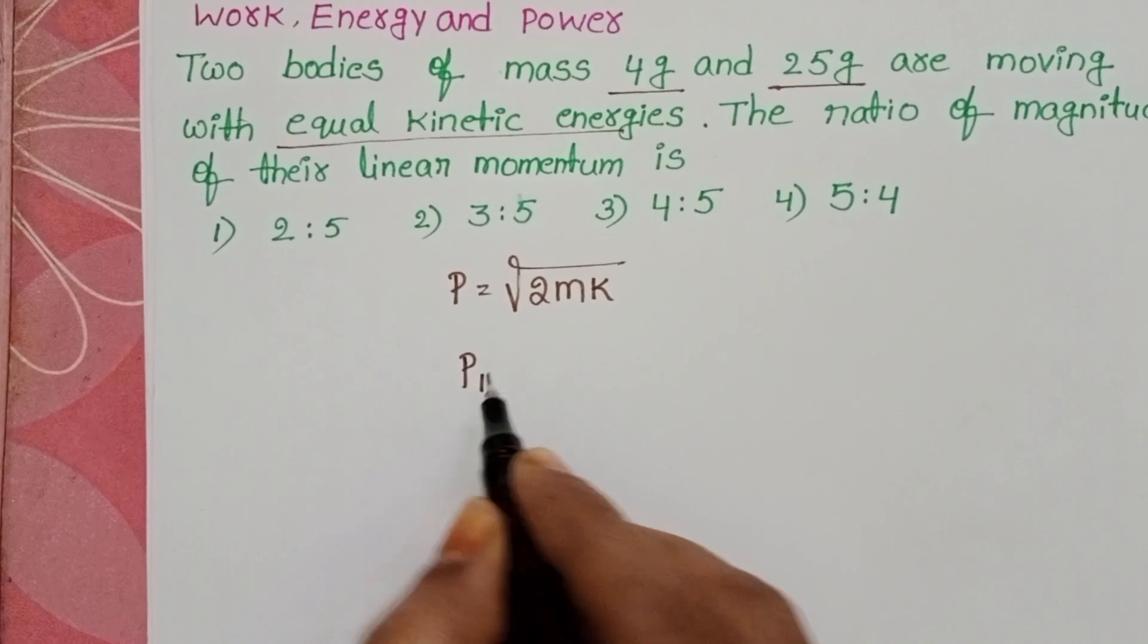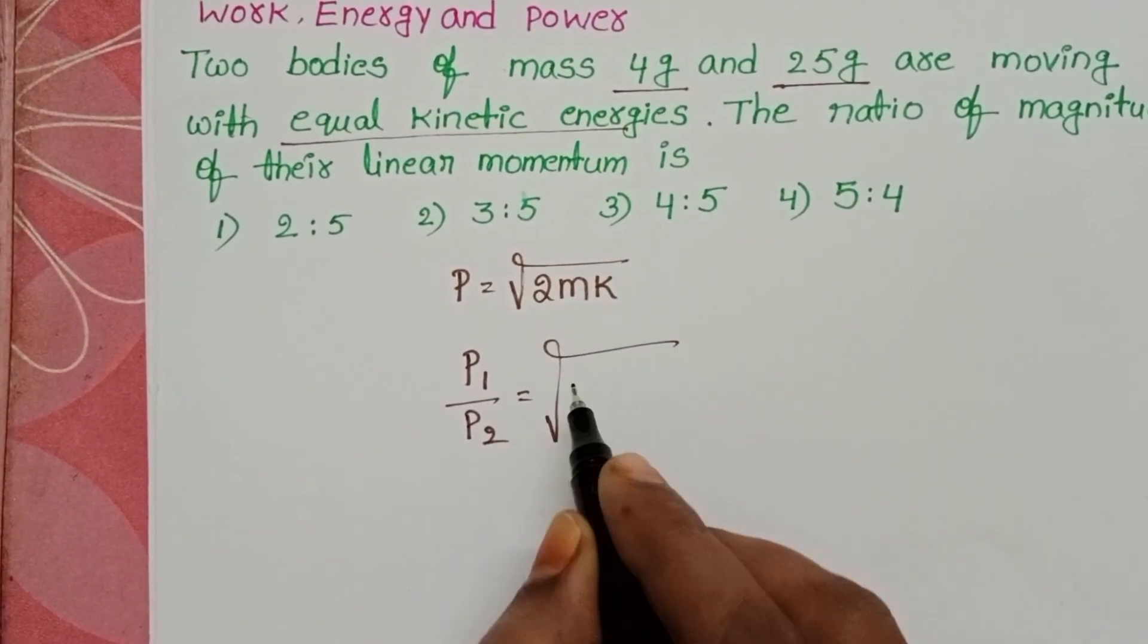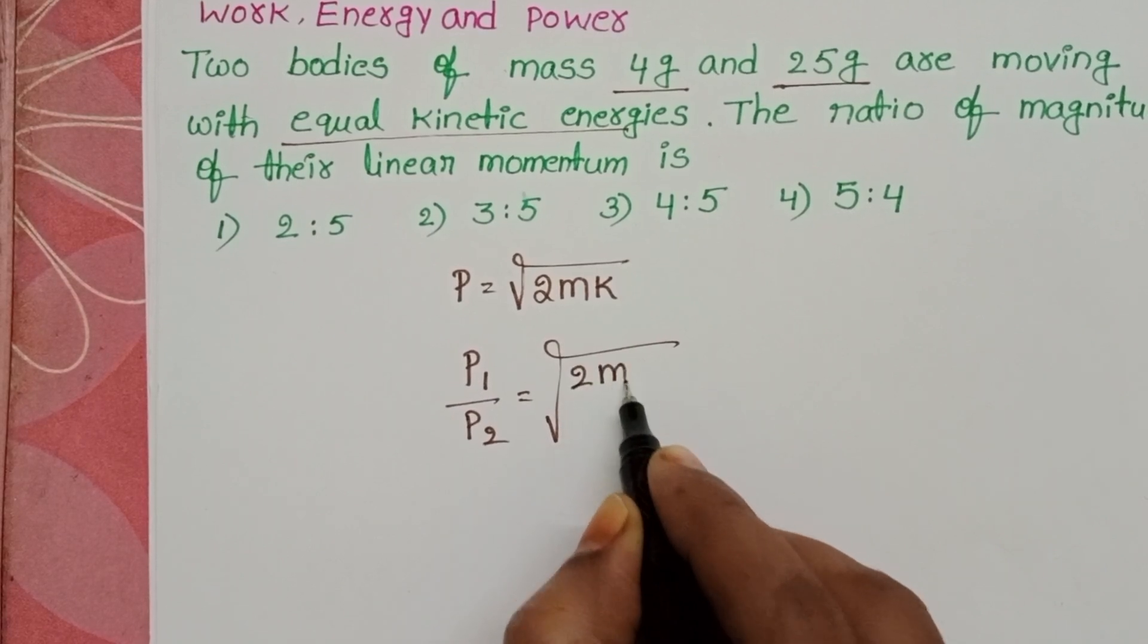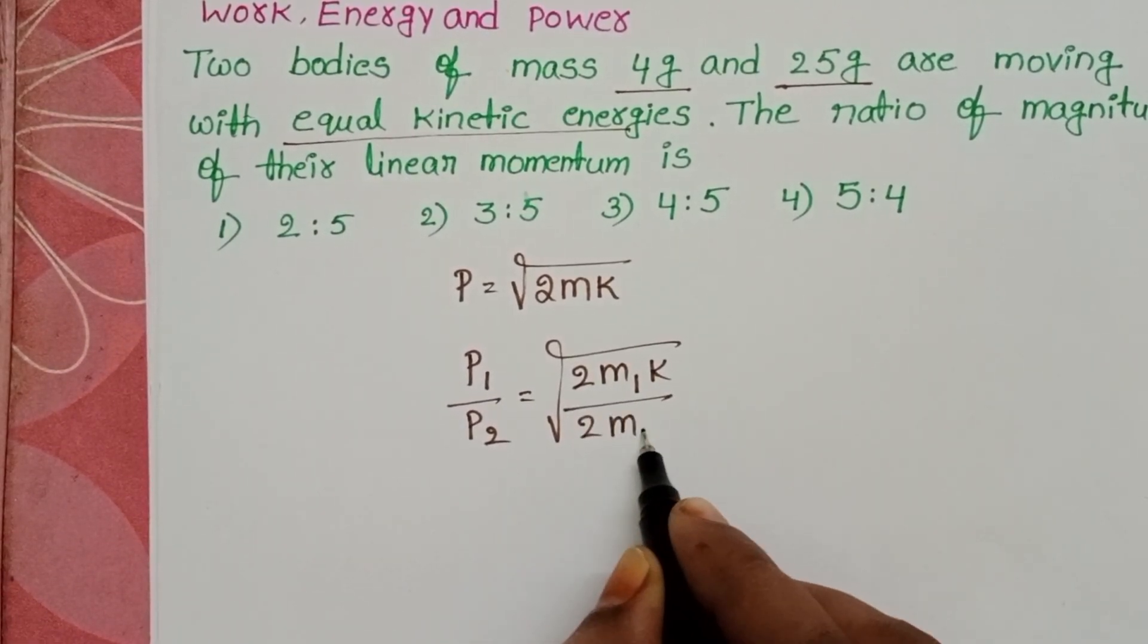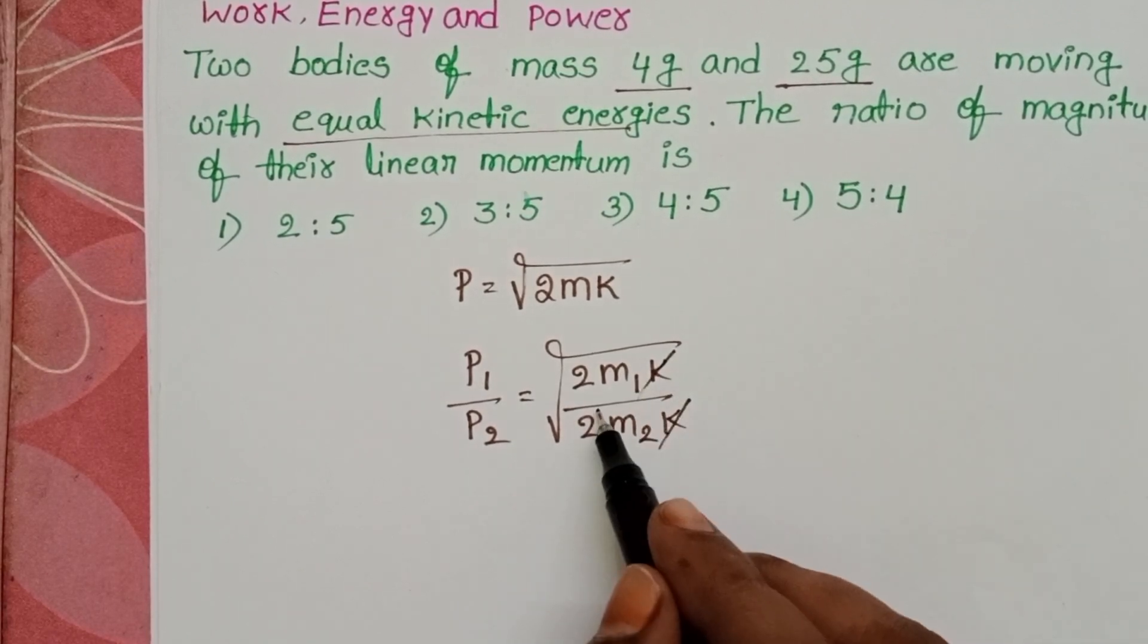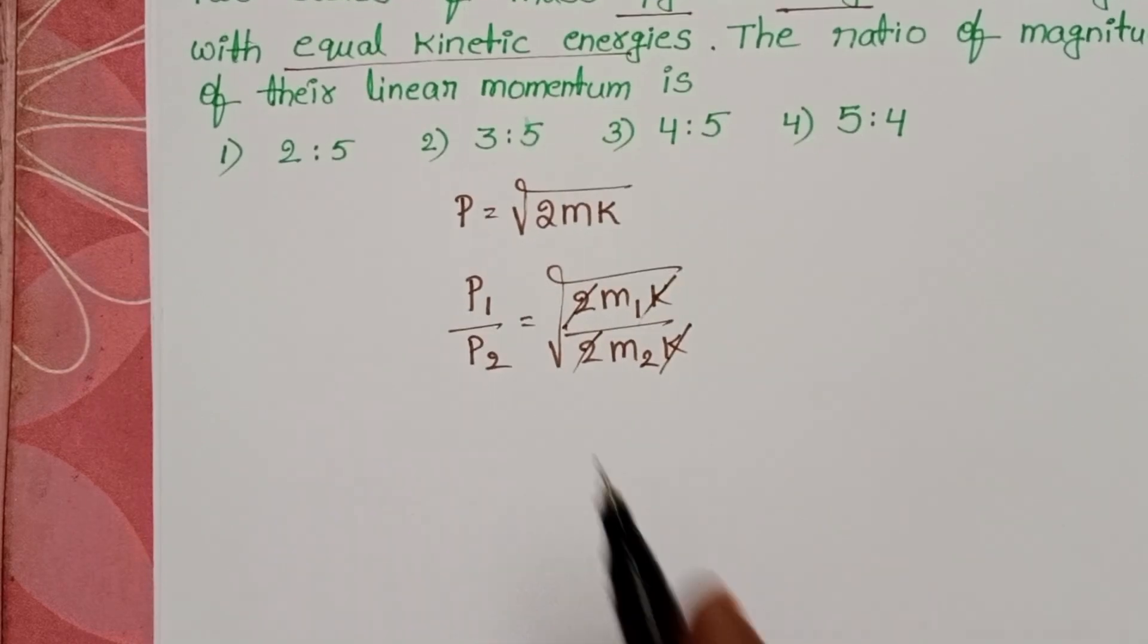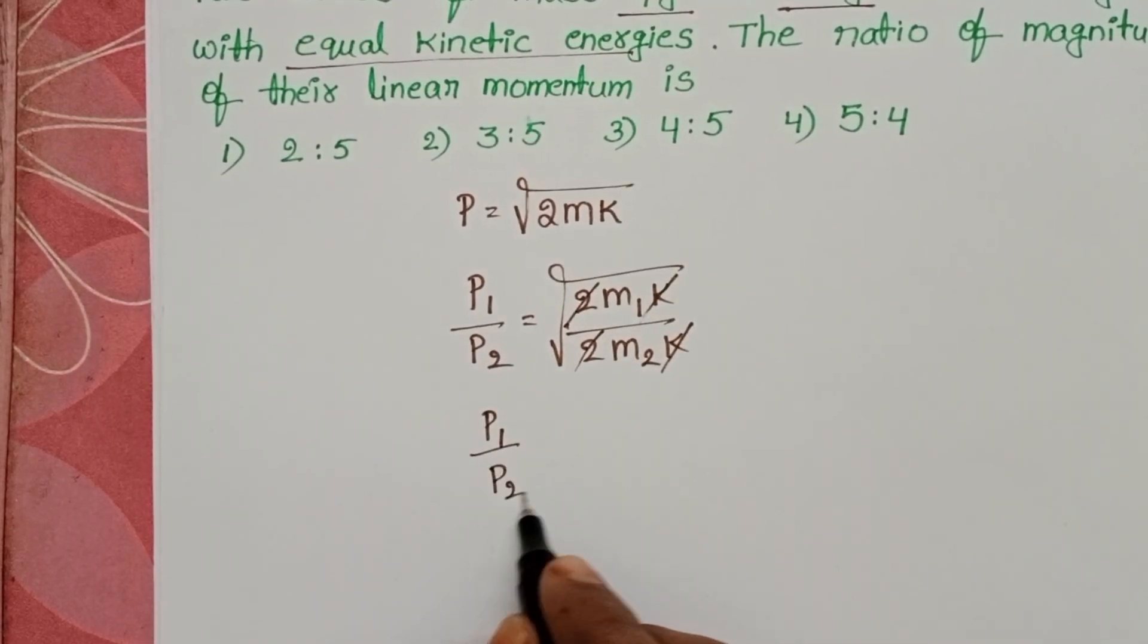Ratio of momenta of two bodies equals square root of 2m1k by 2m2k. Here kinetic energy is constant, so it gets cancelled. Two also gets cancelled. So P1 by P2 equals square root of m1 by m2.